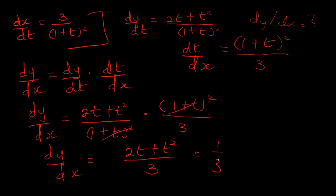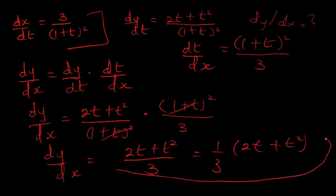So our final answer is dy/dx = (2t + t²)/3, which can also be written with t factored out. When given parametric equations and asked to find dy/dx, differentiate each equation with respect to the parameter, then adjust the derivatives using the chain rule to get what you need. I had dx/dt but needed dt/dx, so I simply reciprocated it and multiplied by dy/dt to get my answer. Thank you for watching and have a good day!